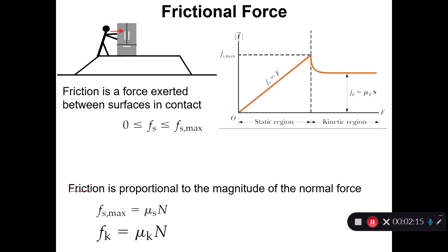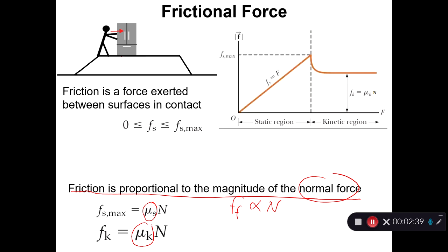The frictional force is proportional to the magnitude of the normal force. To replace the proportionality sign with an equality, we use a constant. In the static region we use the coefficient of static friction, and in the kinetic region we use the coefficient of kinetic friction. μs is the coefficient of static friction and μk is the coefficient of kinetic friction.